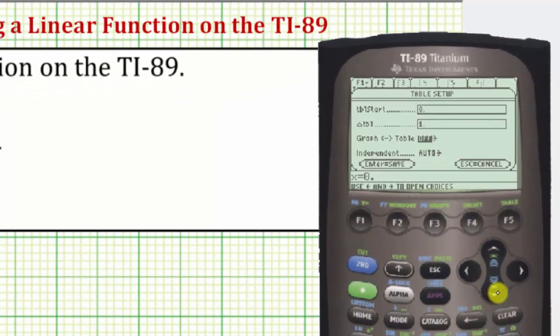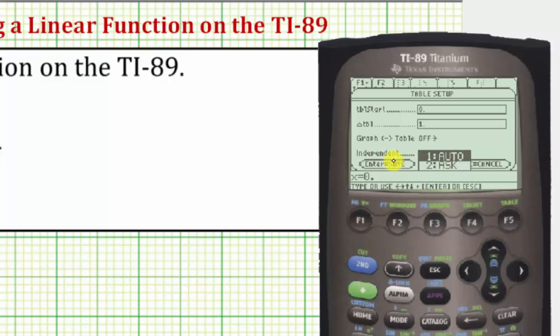If we were to scroll down to the automatic or auto, press the right arrow, and change this setting to ask, this would allow us to enter any X value we wish, and their corresponding Y value would be automatically calculated. Let's go ahead and leave this in automatic though, so I'll press escape.